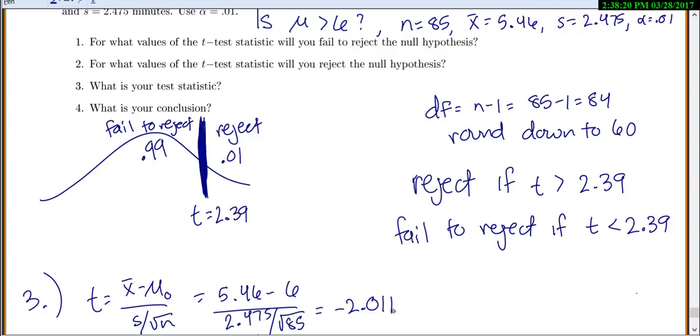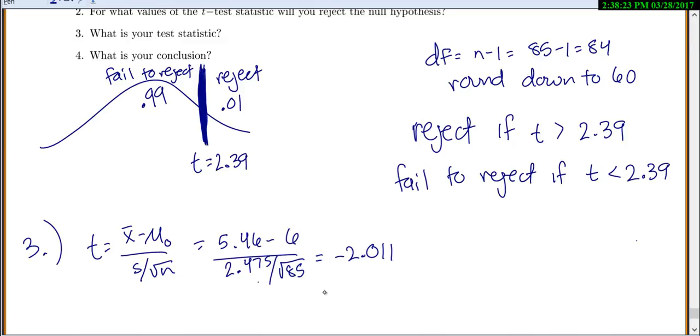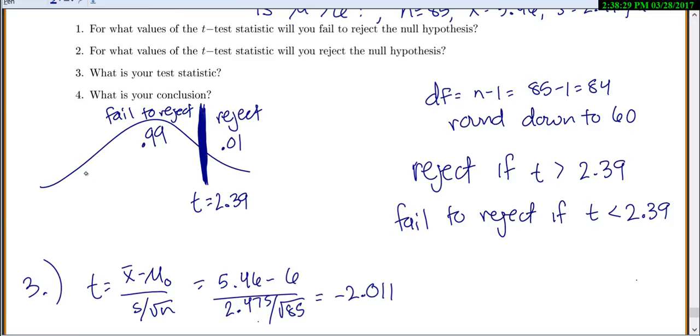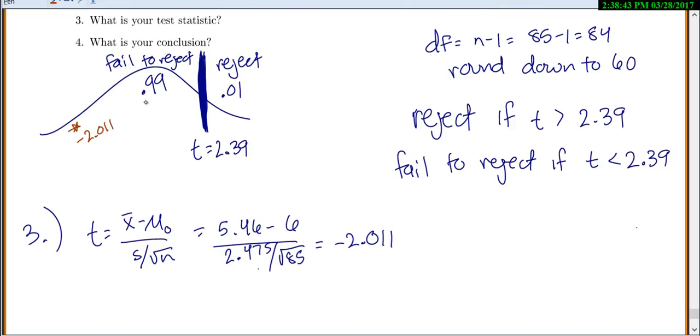Now you ask yourself, what is your conclusion? You're trying to figure out, okay, well where does this show up? On our graph. So negative 2.011 would be somewhere way over here. And so which region did it fall in? It fell in the fail to reject region. So negative 2.011 t equals is in the fail to reject the null hypothesis region. So we're going to fail to reject.